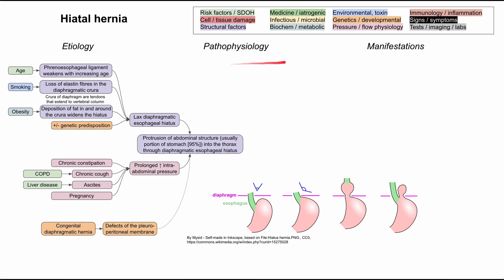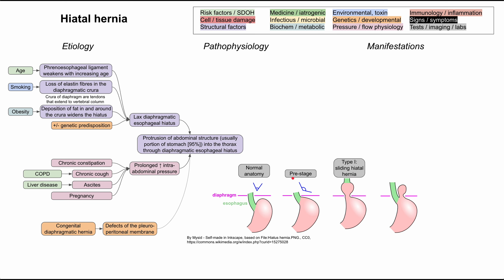When we talk about the pathophysiology and manifestations of hiatal hernia, it's helpful to have this diagram up. There are four diagrams, and the first is normal anatomy — the diaphragm is labeled in pink, the esophagus in green, and the stomach in pink. Notice how the angle between the esophagus and the stomach makes a sharp acute angle. In the pre-stage for a hiatal hernia, that angle becomes much wider and more obtuse. The last two diagrams are type 1 and type 2 hiatal hernias — type 1 is called sliding and type 2 is called paraesophageal.